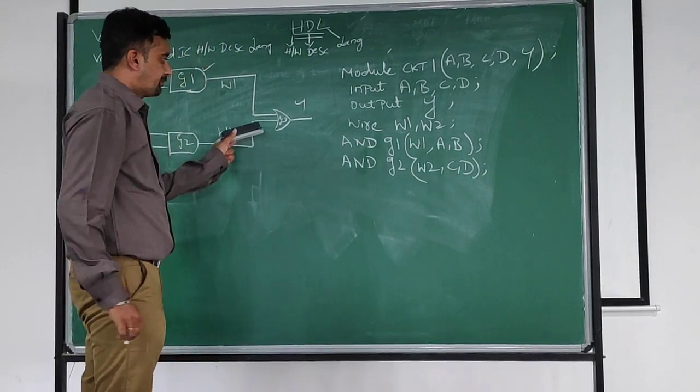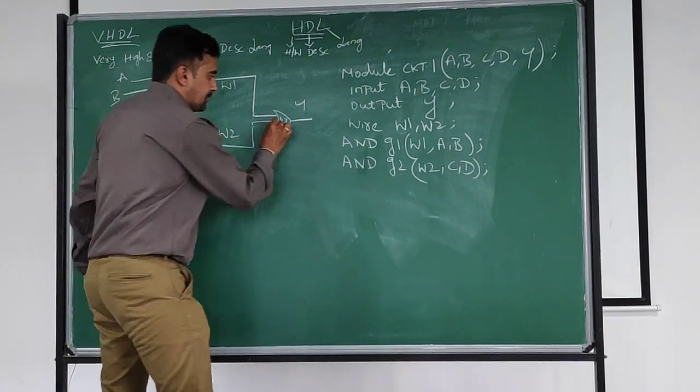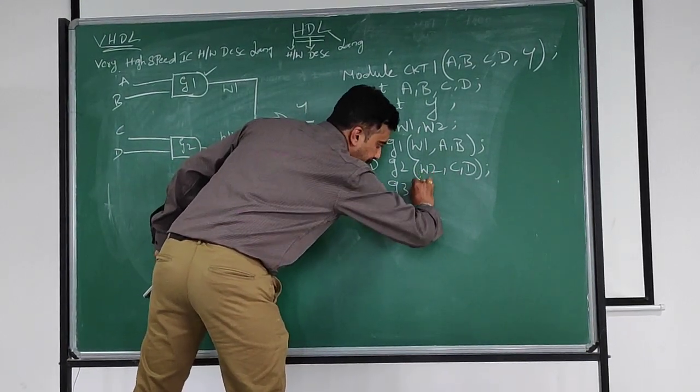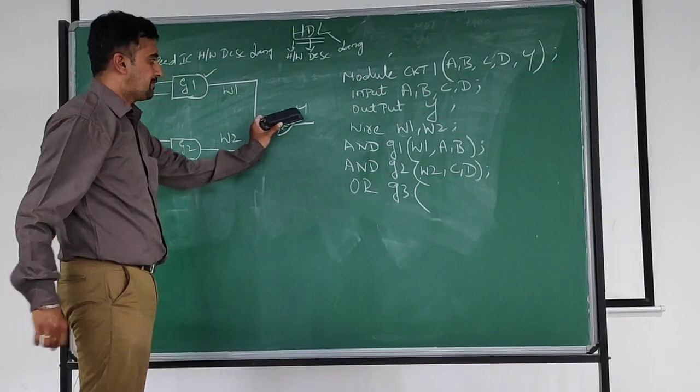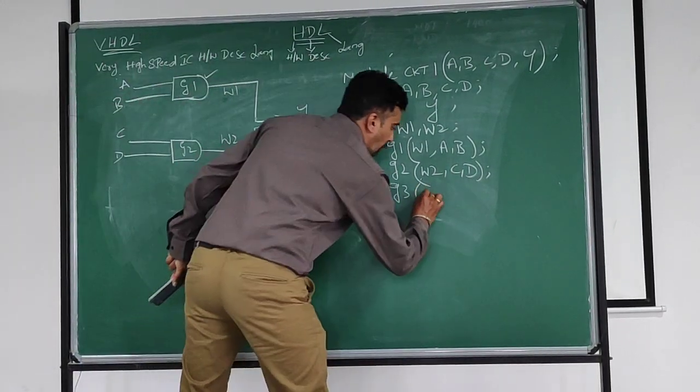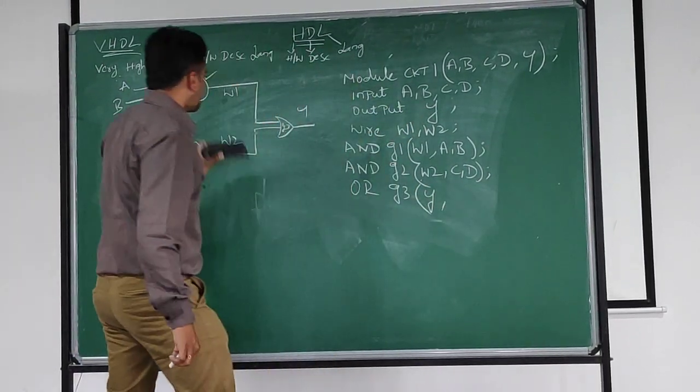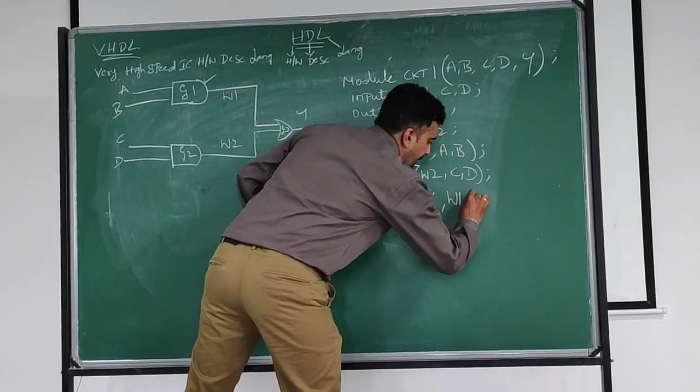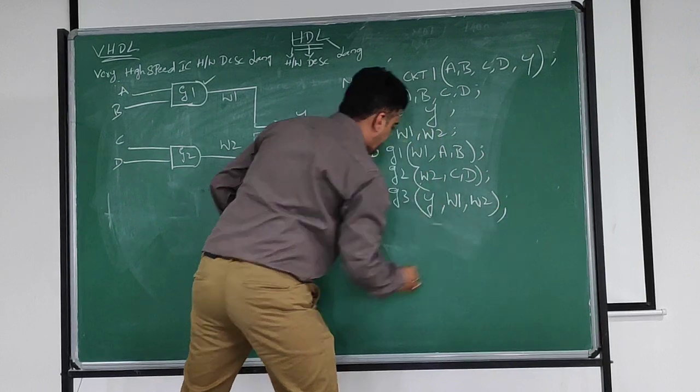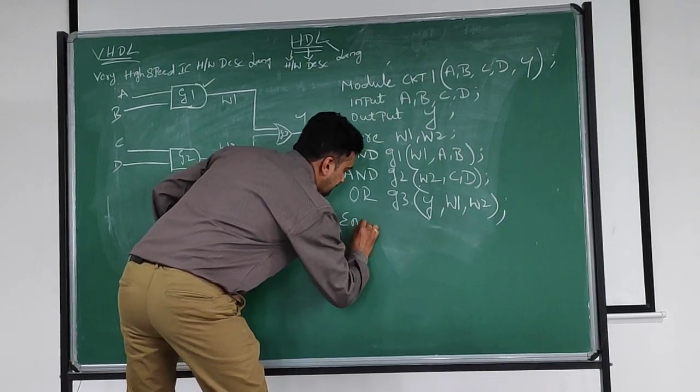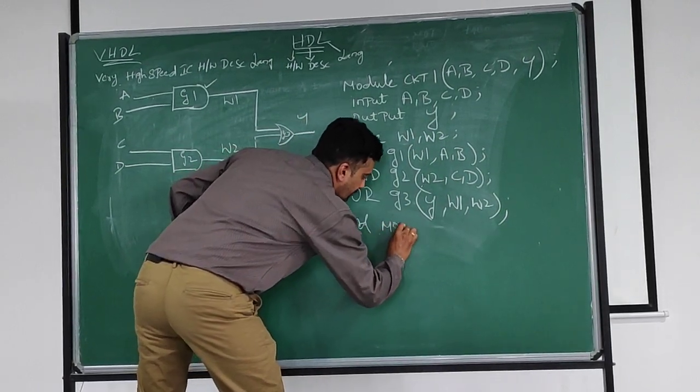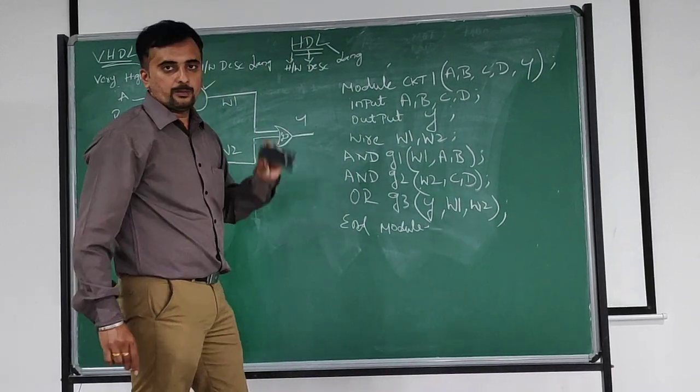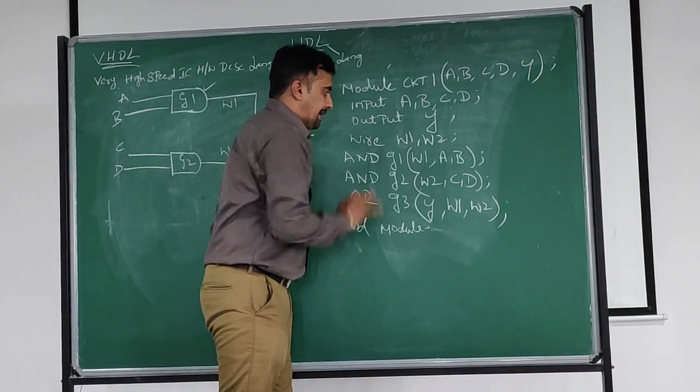After that, come for gate 3. This is or gate. Or gate 3, open brace. Gate 3, open brace. First output Y, comma, input is W1 and W2. W1, comma, W2. Finally, end module. This is the basic program. End module.